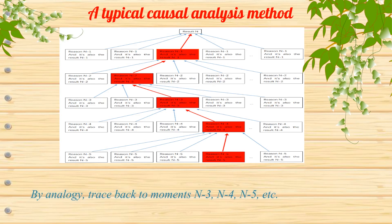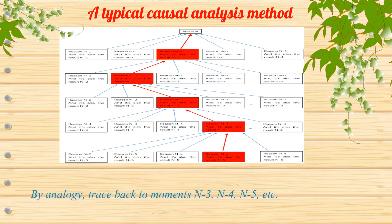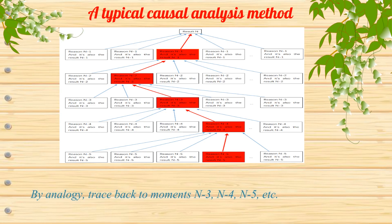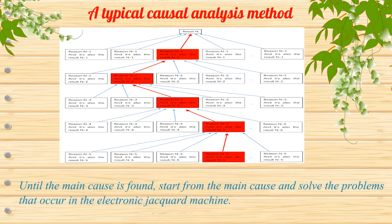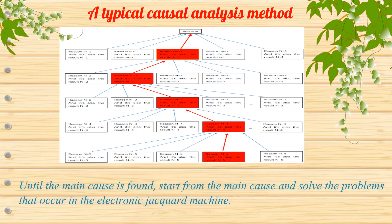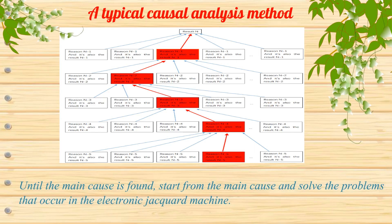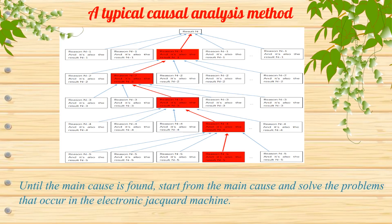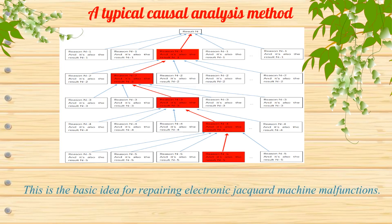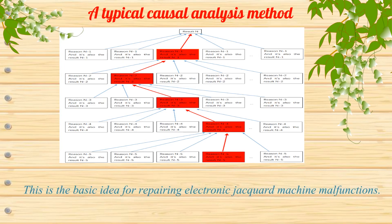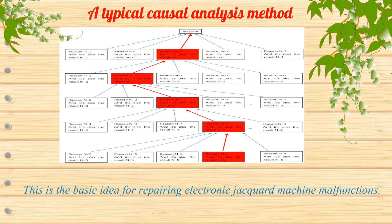By analogy, trace back to moments n3, n4, n5, and so on, until the main cause is found. Start from the main cause and solve the problems that occur in the electronic jacquard machine. This is the basic idea for repairing electronic jacquard machine malfunctions.